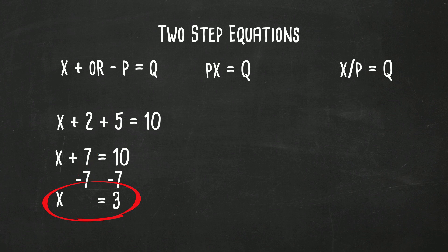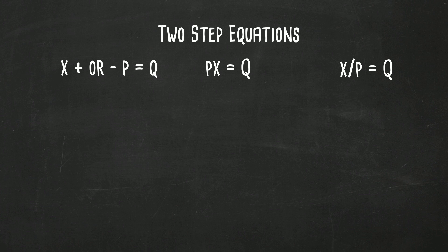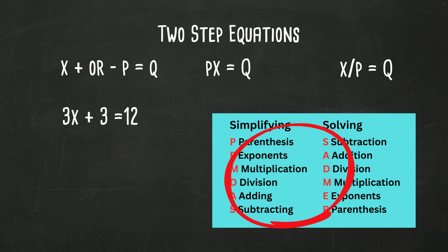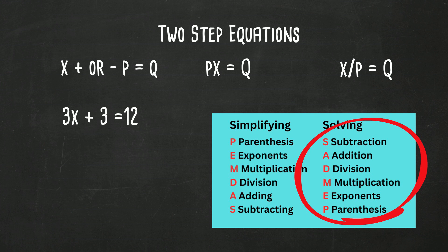Now in this next example, we have 3x plus 3 equals 12. Again, we're trying to get the x by itself on the left and a number on the right. However, which step do we do? Do we divide or add? You've heard of PEMDAS before, which is the order of operations. But that's when you're simplifying. When you have an equal sign, you use the opposite: SADMEP.